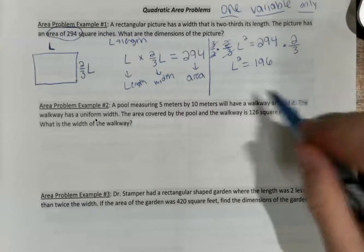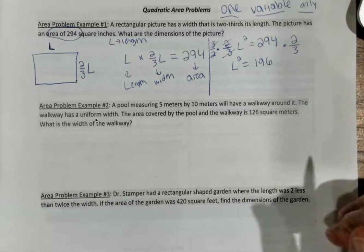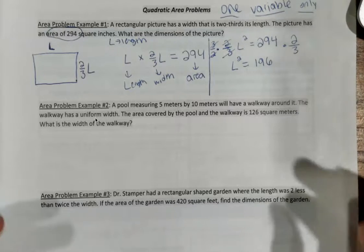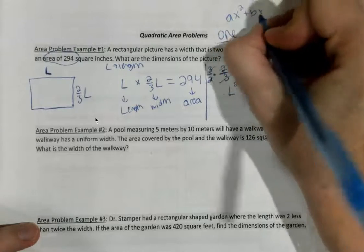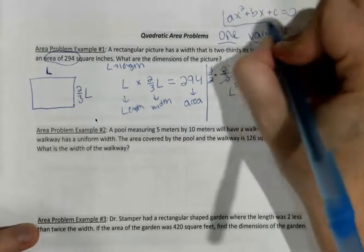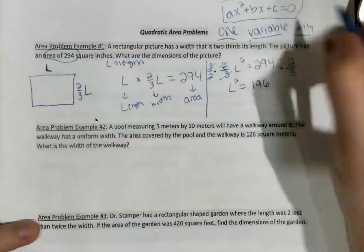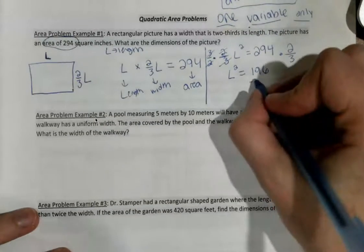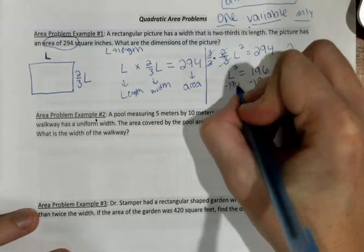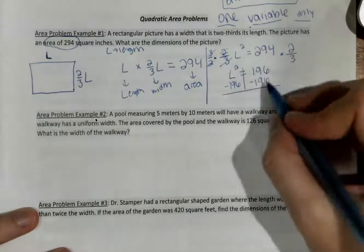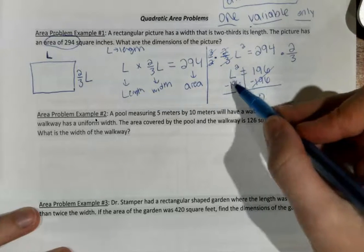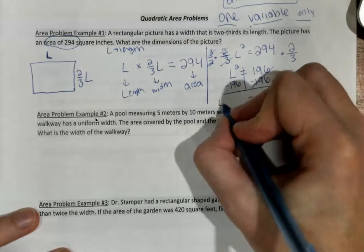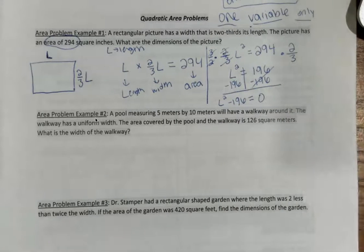Remember, my first step was to get it in standard form. My standard form is AX squared plus BX plus C equals 0. So, I need this to equal 0, so I should subtract 441 on both sides. On the left-hand side, I'm going to have to write it as L squared minus 441. This should start to look familiar to you.